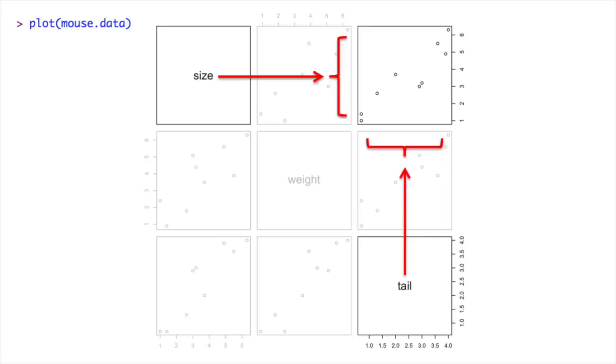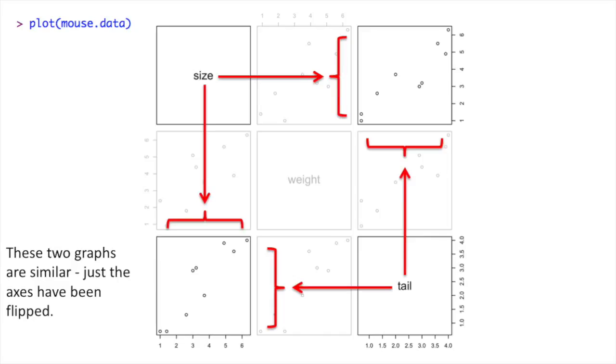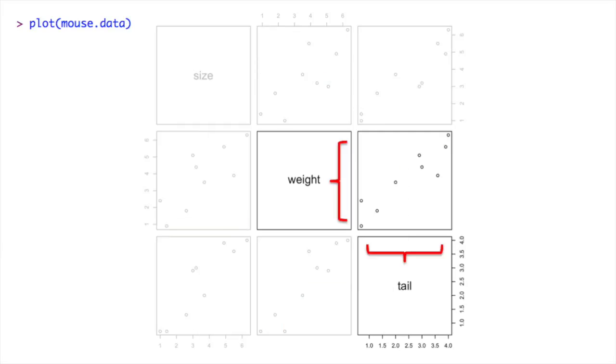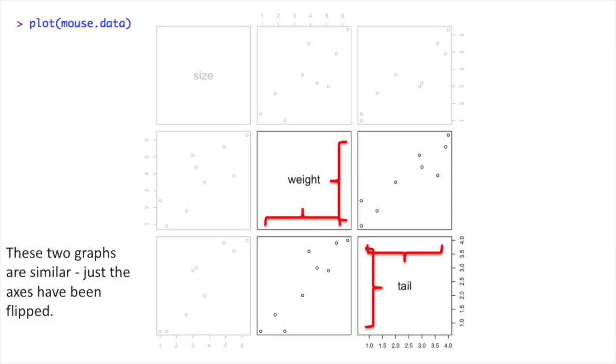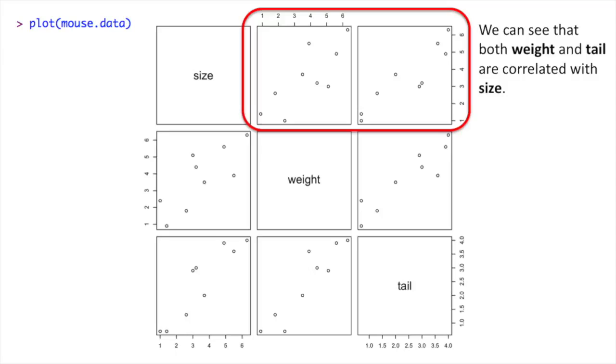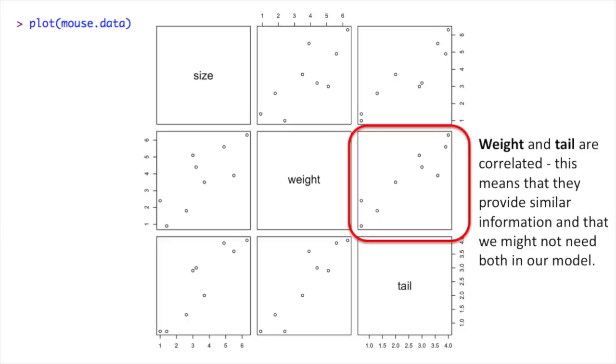The graph in the upper right-hand corner has size on the Y axis and tail on the X axis. And in the lower left-hand corner, we have another graph that's very similar. Just the axes have been flipped. This graph has weight on the Y axis and tail on the X axis. And just like for the other graphs, these two graphs are similar. Just the axes have been flipped. We can see that both weight and tail are correlated with size. This is good. It means that both weight and tail are reasonable predictors for size. We can also see that weight and tail are correlated. This means they provide similar information and that we might not need both in our model. We might only need weight or tail.